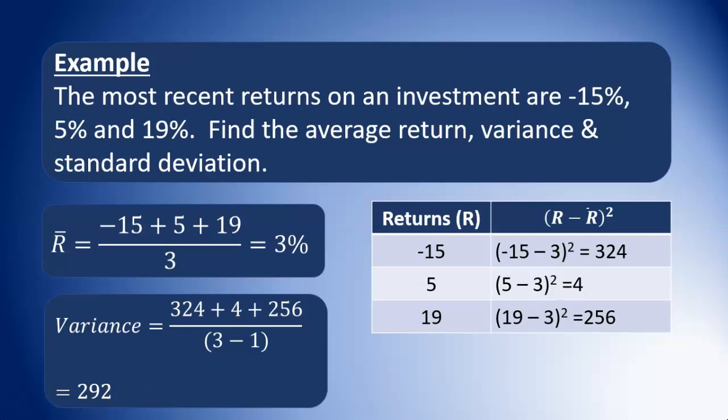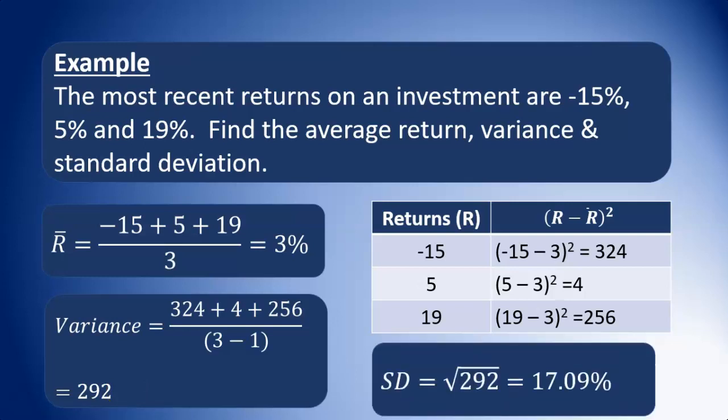The standard deviation is just the square root of the variance — the square root of 292 — which gives us 17.09%. Note that we did not put units for the variance, because the variance is the square of whatever unit we're dealing with, so it's easier to leave the variance as a number. Otherwise, we'd have to write squared percentage. So we have average return of 3% and standard deviation of 17.09%.